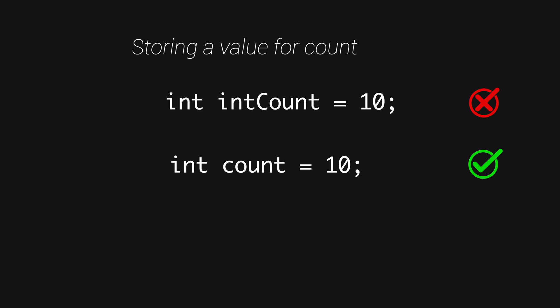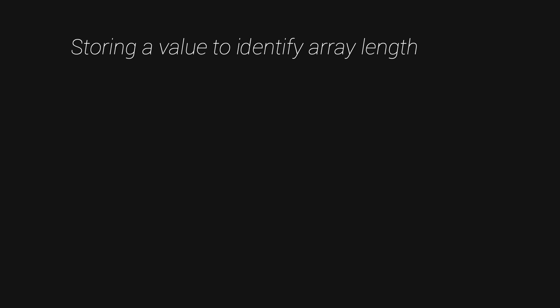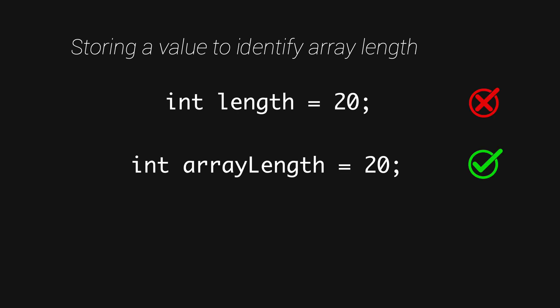However, there are cases where including the type in the name makes sense. For instance, if you want to store the length of an array, saying 'array_length' rather than just 'length' makes it clearer that this variable calculates the length of an array. Similarly for the size of a map. So wherever it's possible, avoid putting the type in the name, but when it adds specific clarity — like 'array_length' or 'map_size' — it's acceptable.